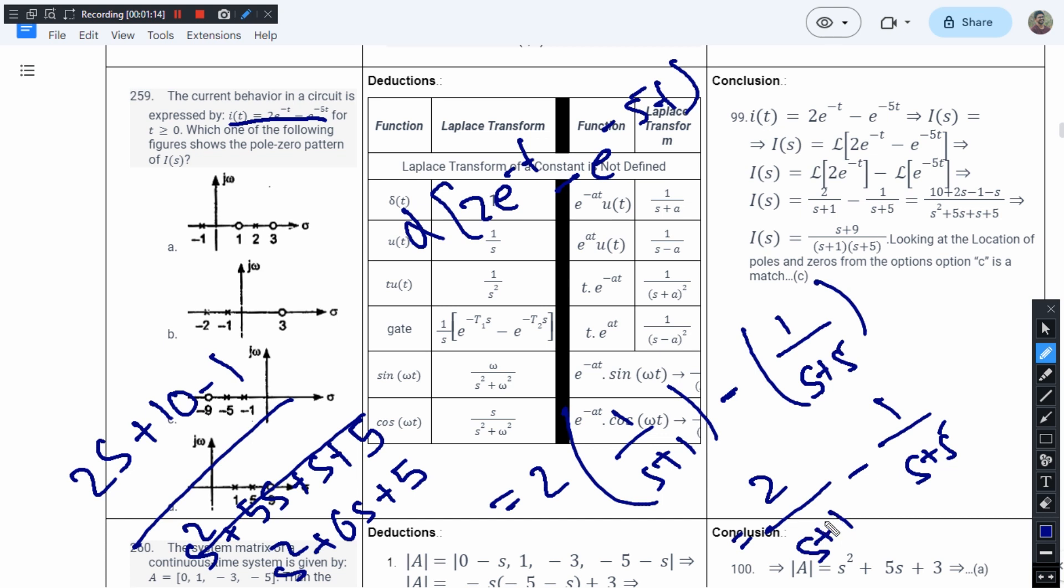I need not do this multiplication because I need to find the poles. From here the poles are s equals -1 and s equals -5. From the numerator I have 2s plus 9.